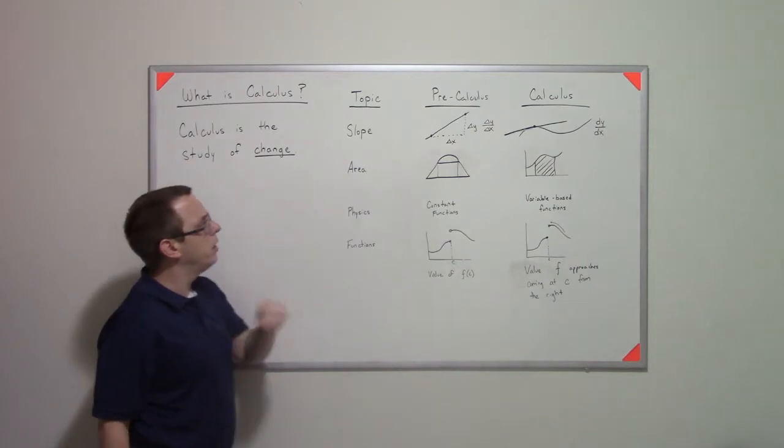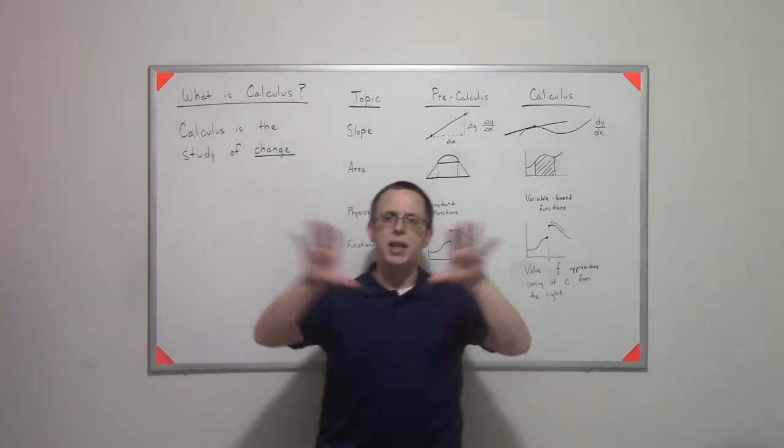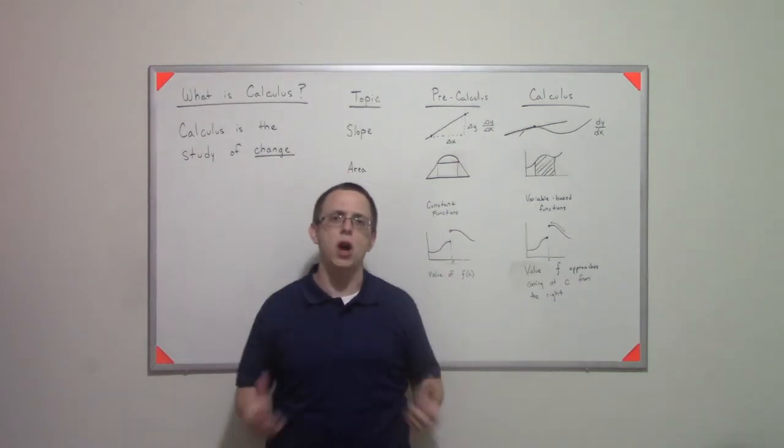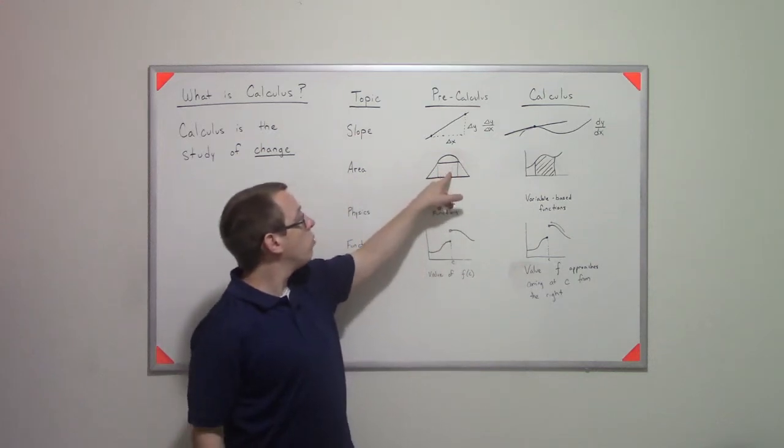And further, when we talk about area. So in pre-calculus and geometry, what we had is we kind of had these fixed known geometric objects, right? We know circles and therefore we know semicircles. We know rectangles, we know triangles.